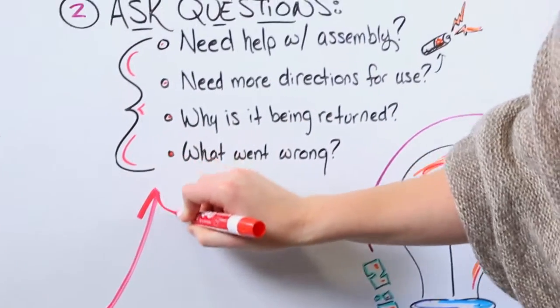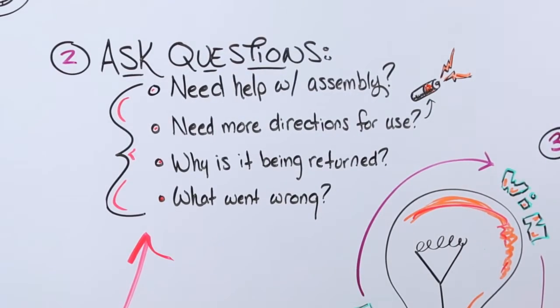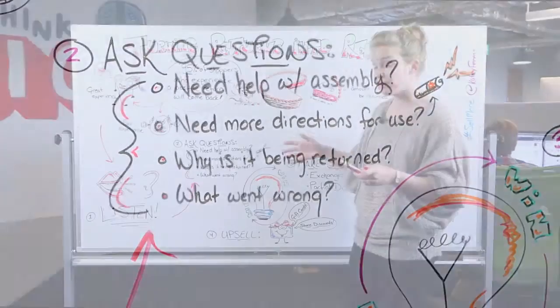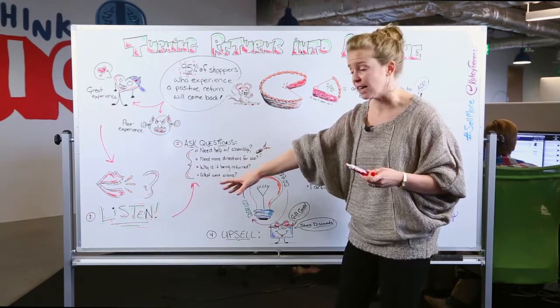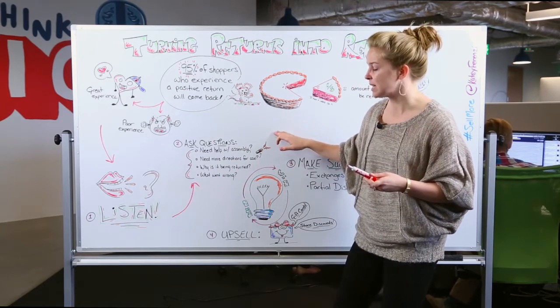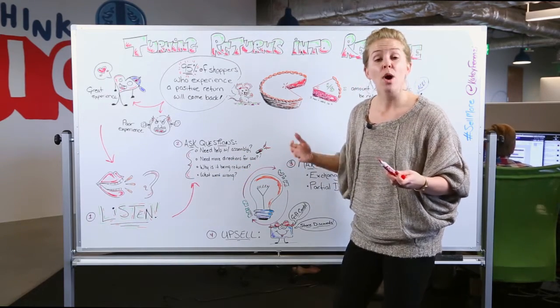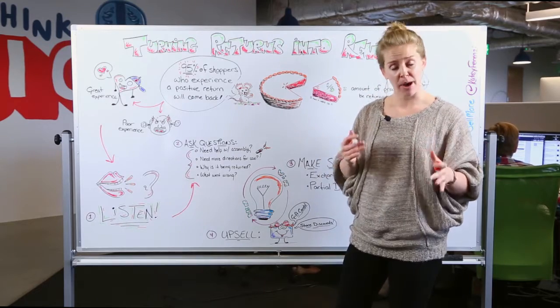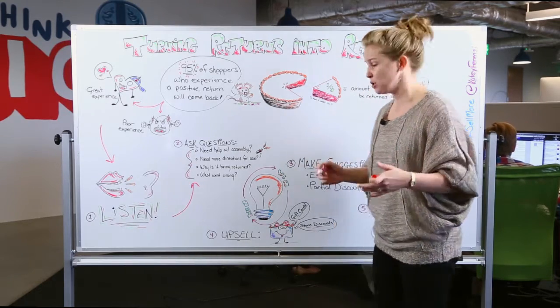As far as asking clarifying questions, make sure you have a list that's of course tailored to your particular product or service, but ask them the stuff that is outstanding from what they've already said. So for instance, do they need help with assembly? Maybe they just need batteries. What went wrong? So you have a very good picture about what you can do then to remedy the situation.